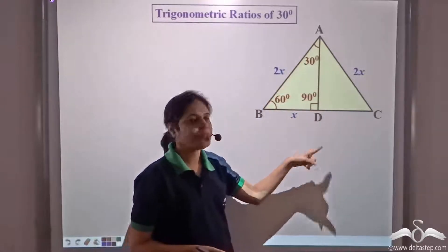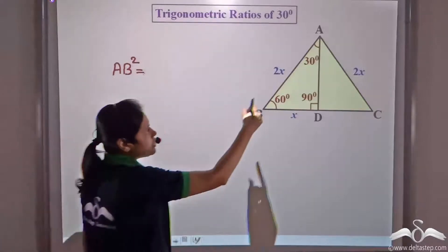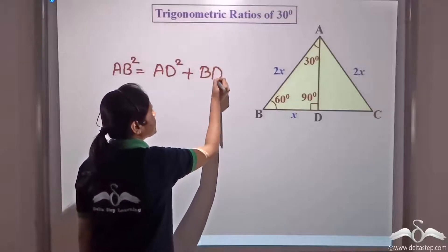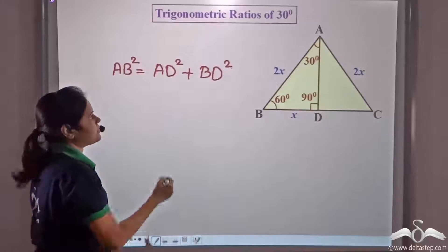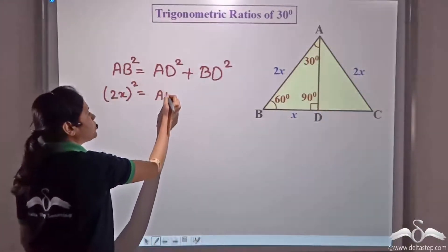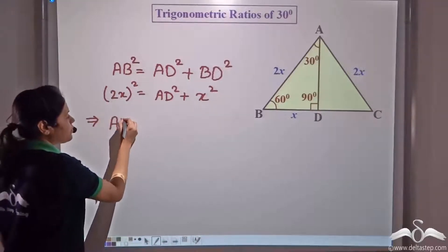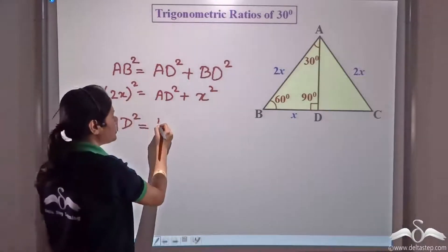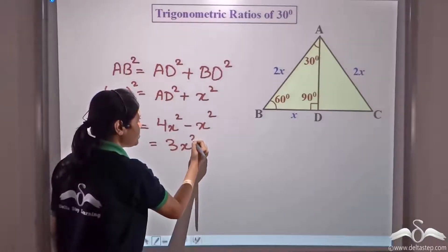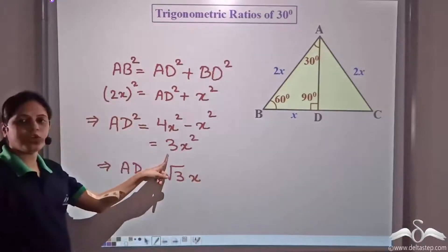Now let us find AD using Pythagoras theorem: AB² = AD² + BD². AB is 2x, so (2x)² = AD² + x². This gives AD² = 4x² − x² = 3x². Therefore AD = √3·x, taking only the positive root.